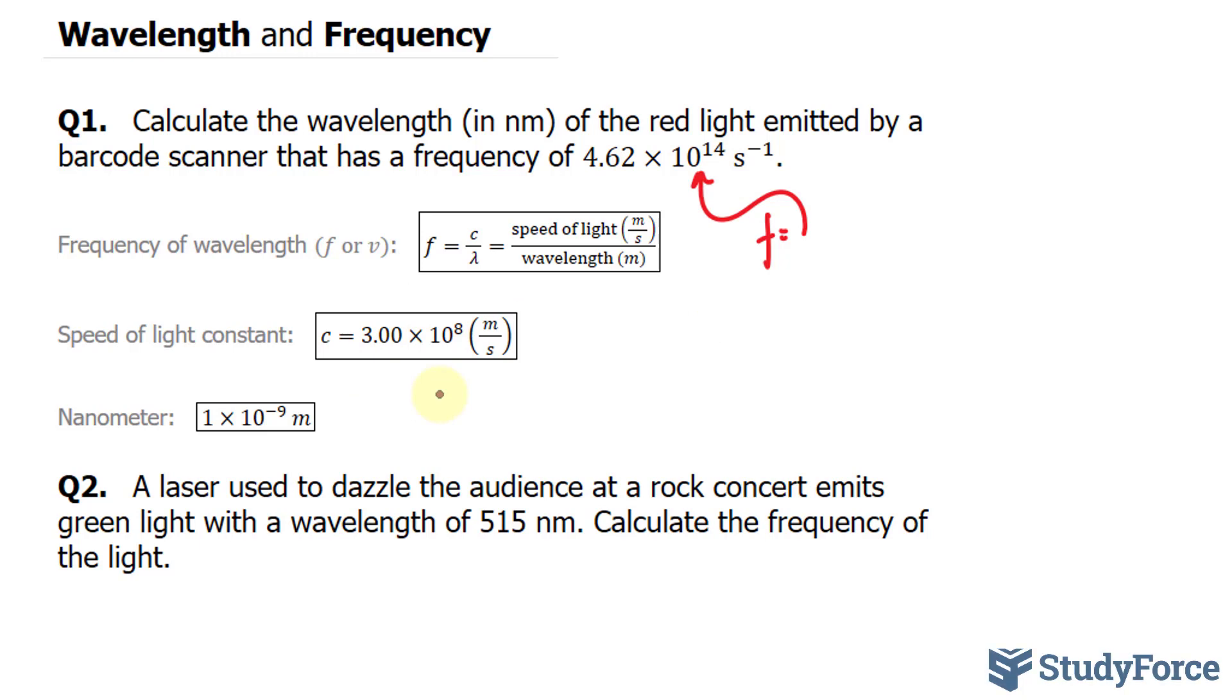So all we have to do is rearrange. So let's go ahead and rearrange for the symbol lambda. We have the frequency is equal to c over lambda. I'll multiply both sides by the wavelength. This cancels out and then I'll divide both sides by f. This gives us the wavelength is equal to the speed of light over the frequency.